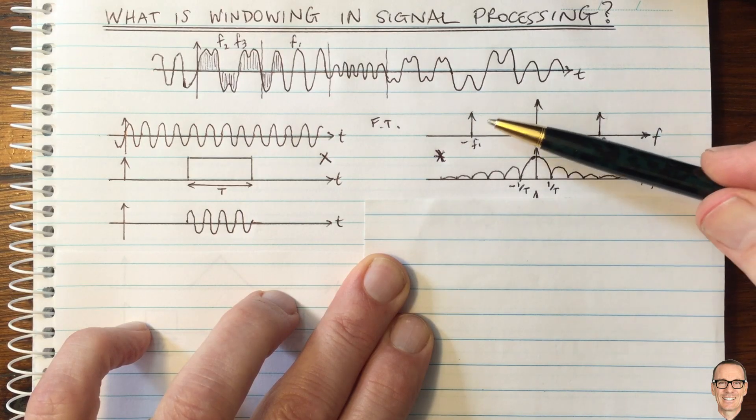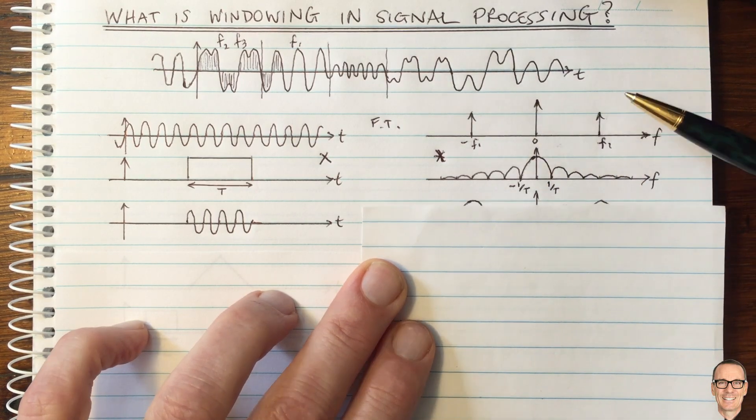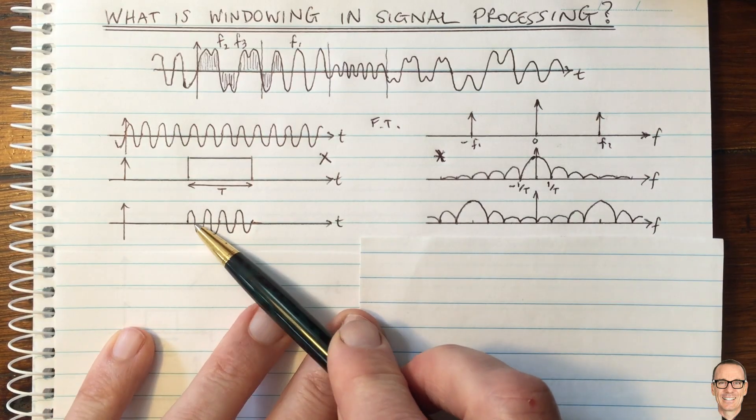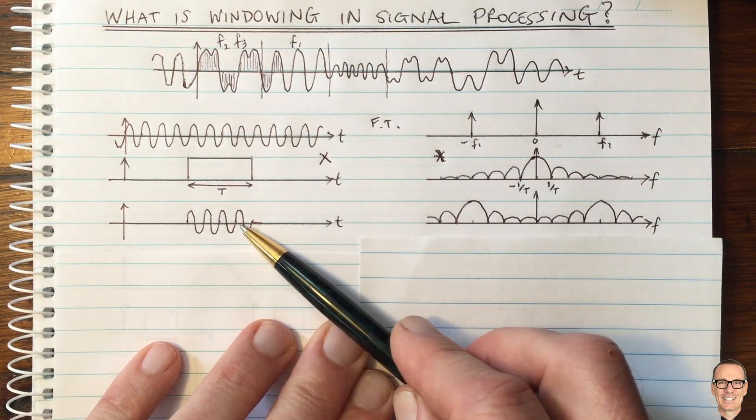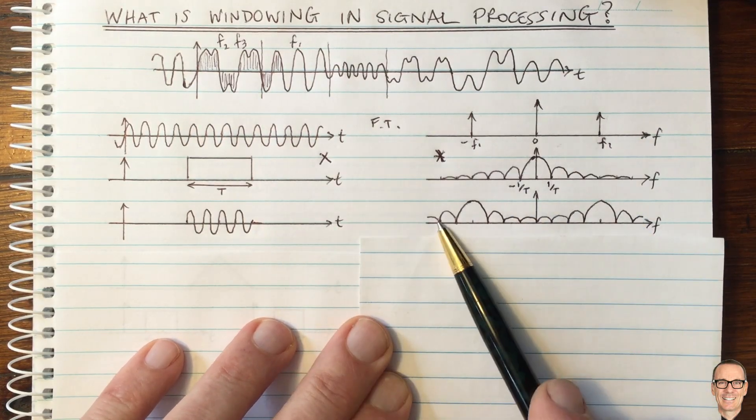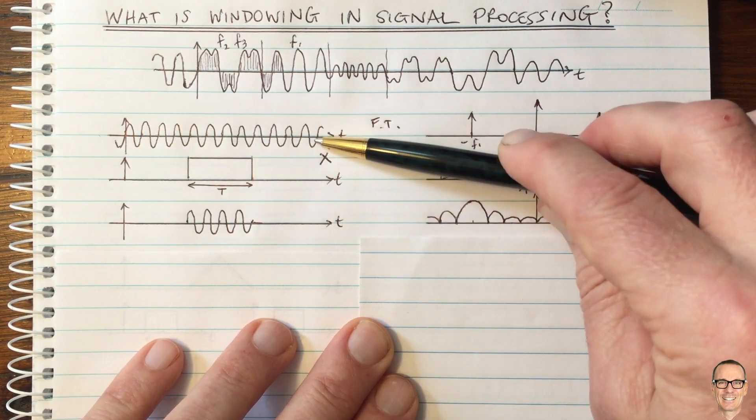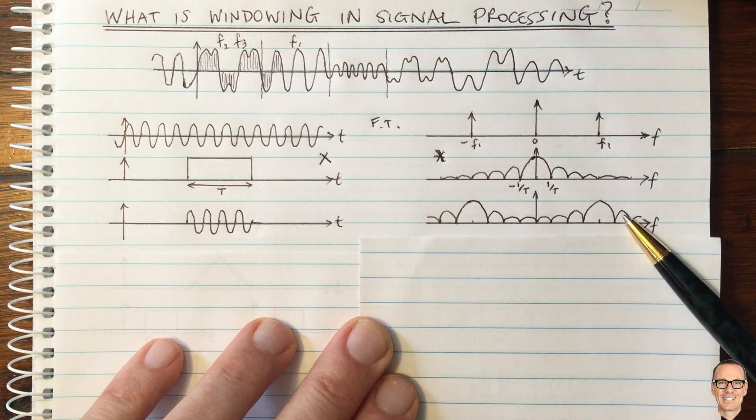And when you convolve a function with a delta function, the function gets located where the delta function is. So we have this answer here. So here's our measured sequence that we've measured from the overall sequence. And in the frequency domain, it looks like this. So it's not the nice clean delta functions that we had for this signal, but we've only measured it over a finite time. And now we have this.